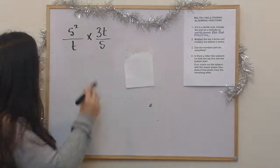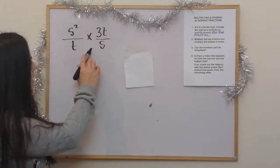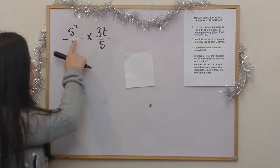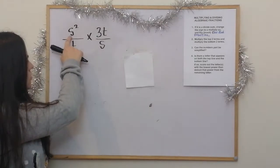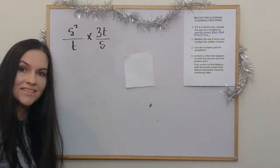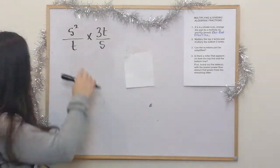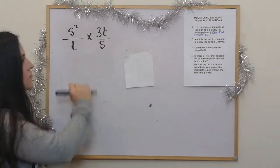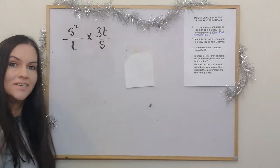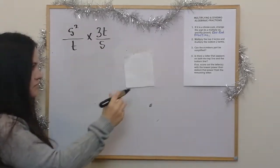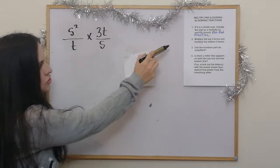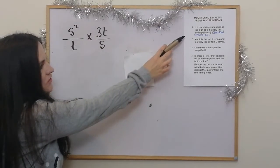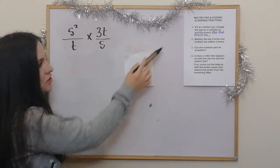In this example, one thing to note: we've used the letter S — just make sure you realise that's an S and not a 5. As usual, step 1 asks if it's a divide sum, but it's not a divide, it's a multiply.